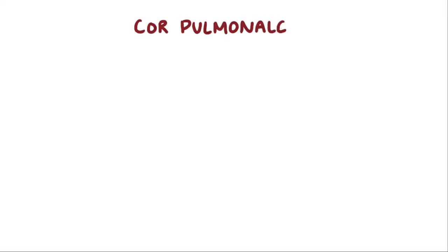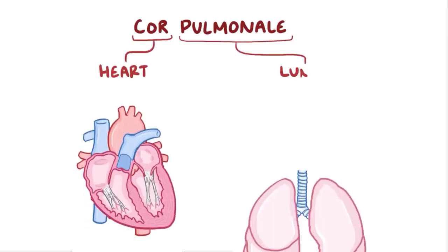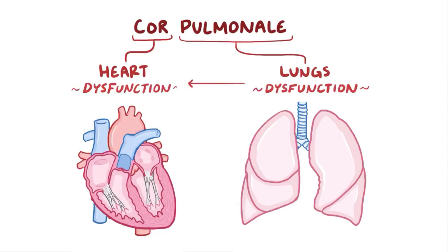With cor pulmonale, 'cor' is Latin for heart, and 'pulmonale' is Latin for lungs. Cor pulmonale, then, is a relationship between the two, and it's when a disorder of the lungs causes dysfunction of the heart.